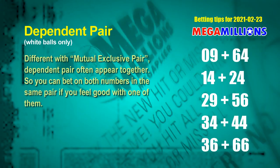Some numbers are mutual exclusive, and some are dependent. Numbers in the same dependent pair you can bet on both, because they often appear together in the winning numbers of a draw. The white ball dependent pairs for the next draw are: pair 1: 09 and 64; pair 2: 14 and 24; pair 3: 29 and 56; pair 4: 34 and 44; pair 5: 36 and 66.